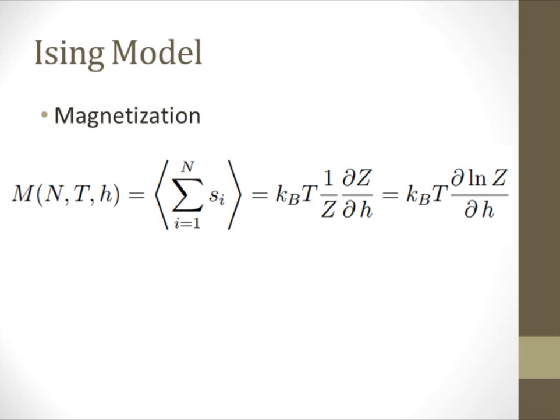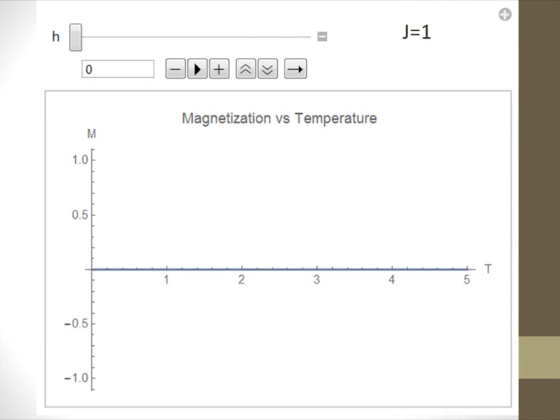Physically speaking, this means that without an external field, the magnetization is zero for all temperatures greater than zero. The strength of the particle interaction alone is not sufficient to cause the spins to align in the same direction at nonzero temperatures.